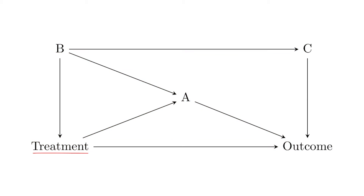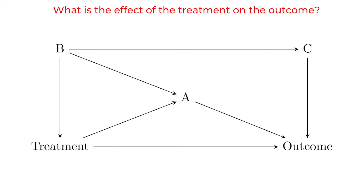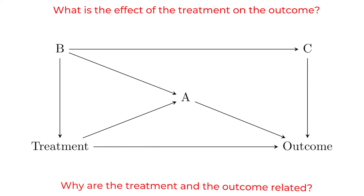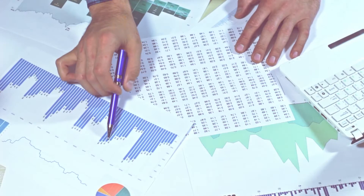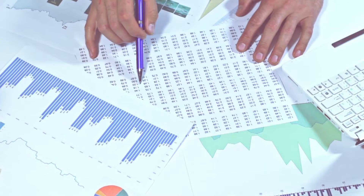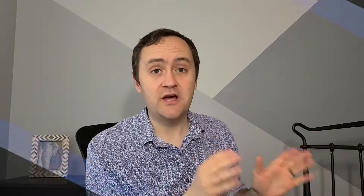Let's take a look at this very basic, generic diagram. We have a treatment, we have an outcome, and some other stuff. If we're interested in the causal effect of treatment on outcome, you want to ask: why are the treatment and the outcome related to each other? One reason is the arrow from treatment to outcome — treatment causes the outcome. But that's not the only reason. If we looked at the correlation between treatment and outcome in the data, that would not by itself tell us the causal effect, because there are other reasons why those two variables might be related. That's all the stuff we've been talking about since we started talking about identification.